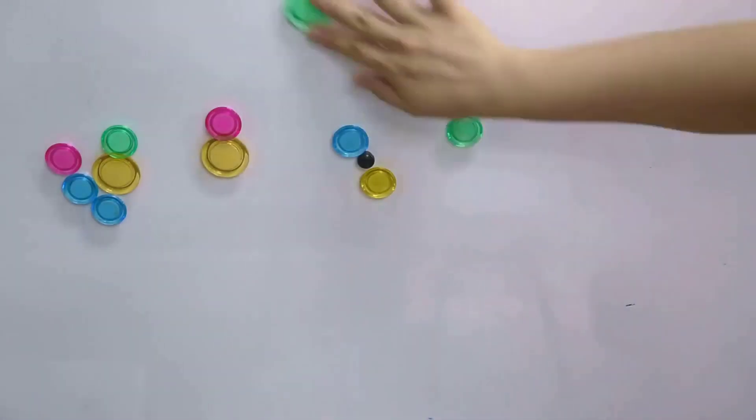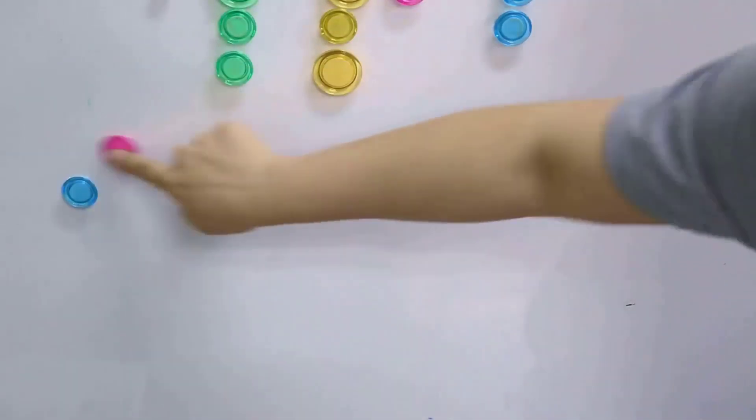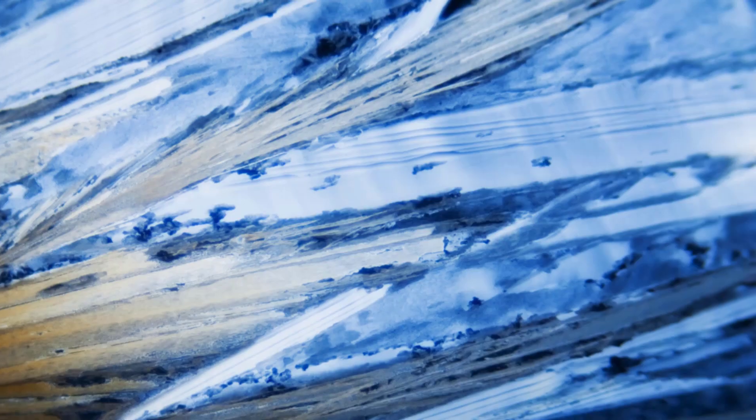In contrast, anti-ferromagnetism presents a different kind of order, where spins alternate their alignment, creating a mesmerizing dance of up and down arrows.